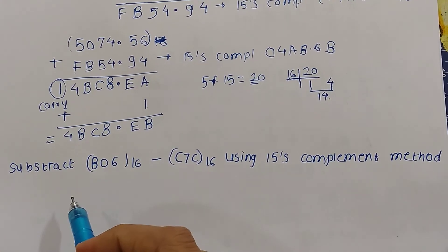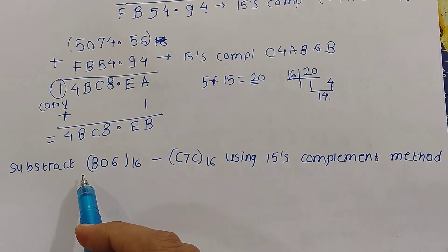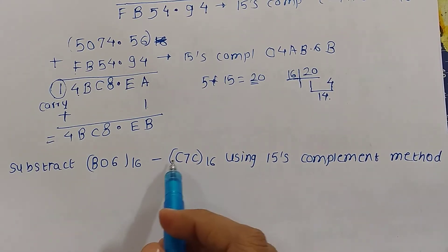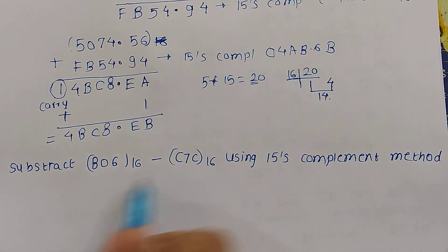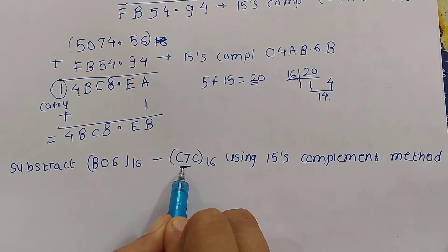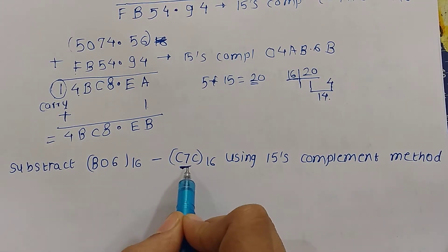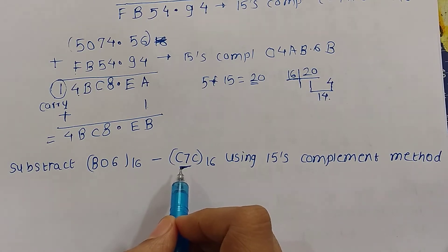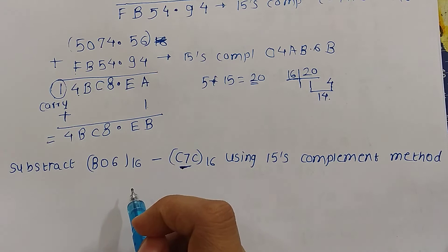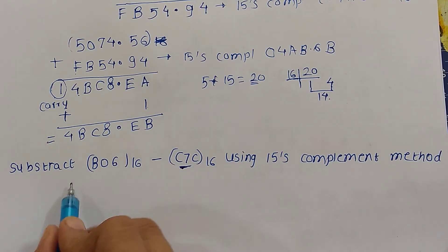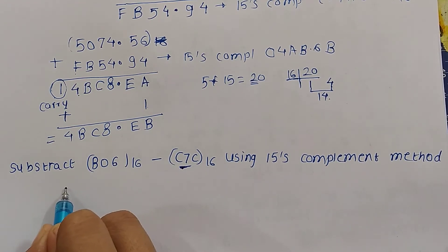Now we solve the second example: subtract C76 from B06 using 15's complement method. Here C76 is the number to be subtracted. We take its 15's complement by subtracting it from FFF. There are 3 digits, so we use 3 F's.